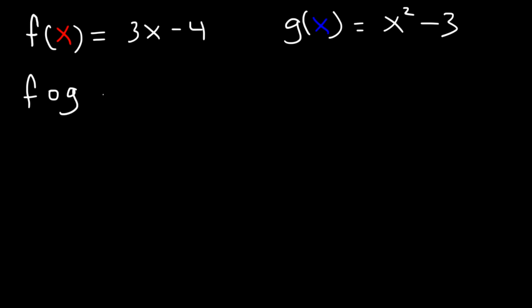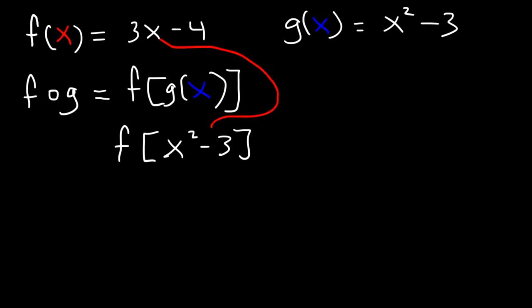g is inside of f, so this is equivalent to f of g of x. How can we find f of g of x? Well, let's replace g. g is x squared minus 3, and notice that x squared minus 3 is inside of f. So we're going to have to replace x with x squared minus 3.